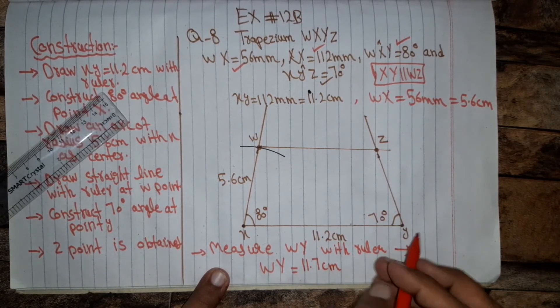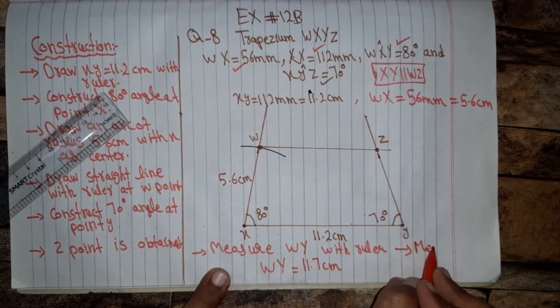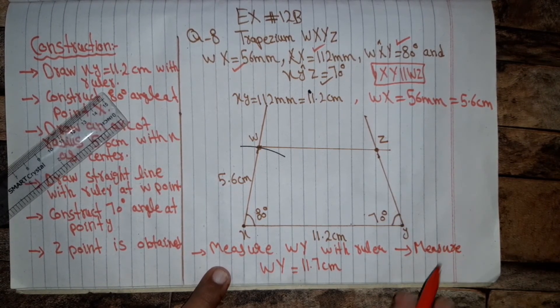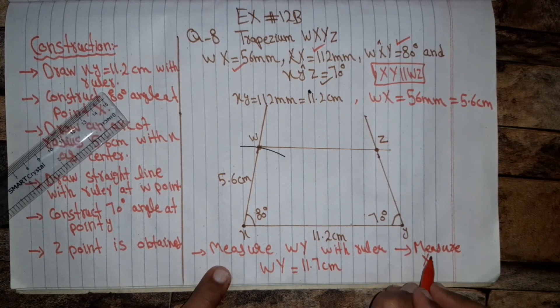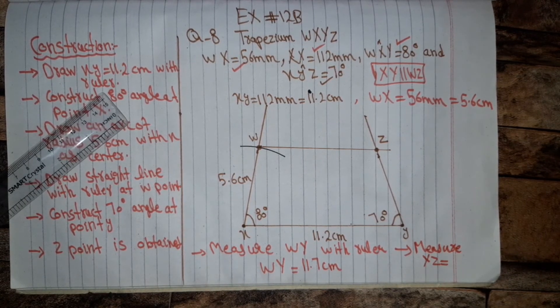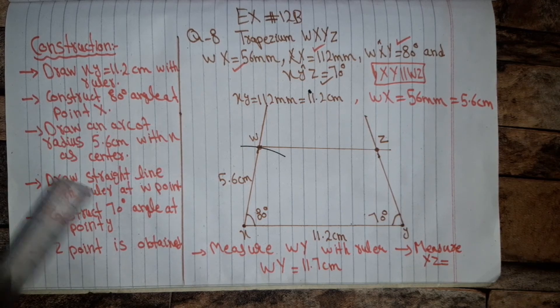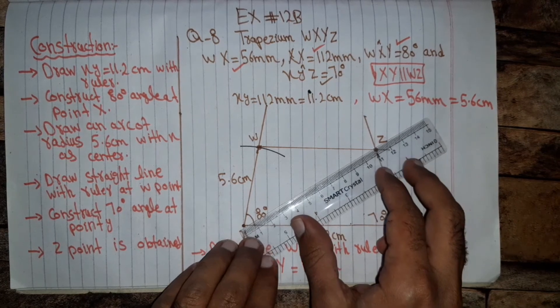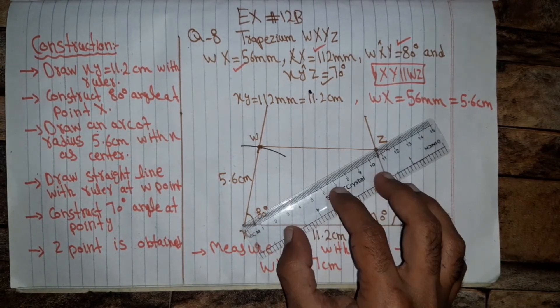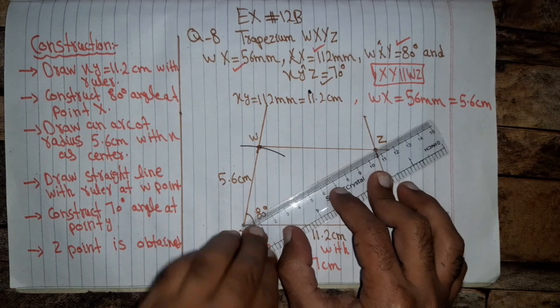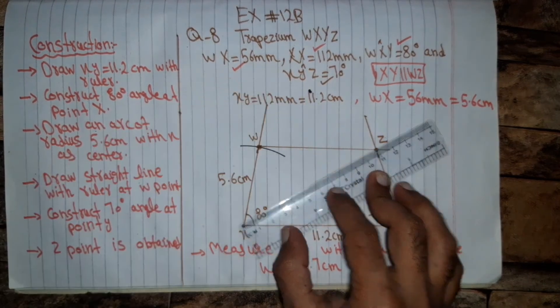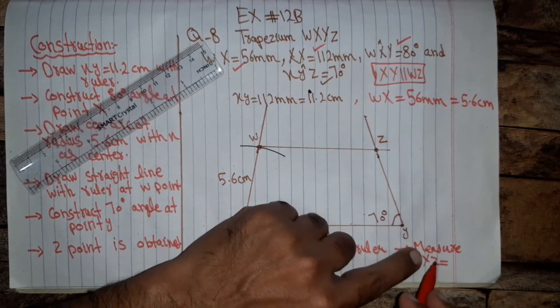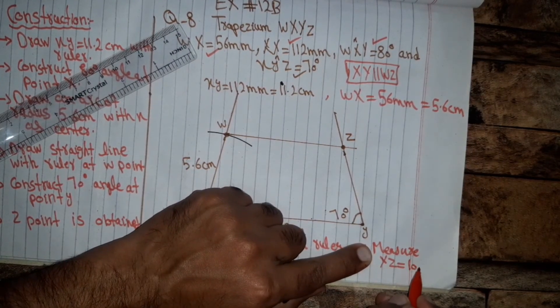Next measure XZ. So we will measure XZ. And you can see that this is ten point nine centimeters. Ten point nine centimeters. So XZ equal ten point nine centimeters.